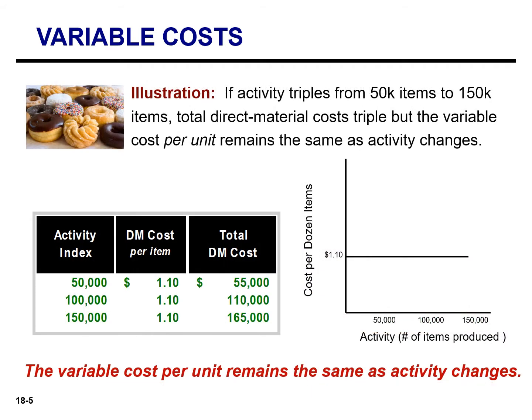Variable cost per unit is constant as activity changes. The cost per unit in this illustration — a dozen donuts — remains the same at $1.10. If activity triples from 50,000 dozen donuts to 150,000, the total material cost will triple, but the variable cost per unit will remain the same, in this case $1.10.